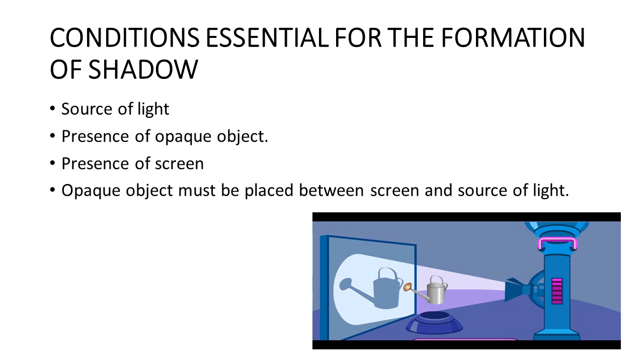The other condition is that there must be an opaque screen to receive the shadow of opaque object. And the last condition is that the object must be placed in between the screen and the source of light. If all these conditions are fulfilled, the shadow will be formed.